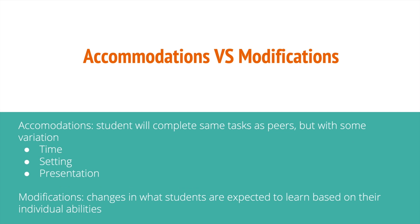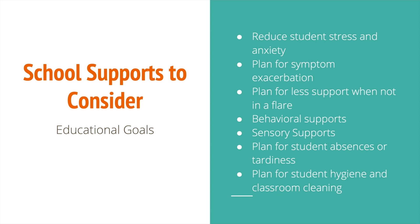Accommodations versus modifications — I'm going to be listing ideas of things you can use and list in either your IEPs or 504s for your students. In terms of a 504 plan, here are some examples of educational goals to consider for your PANS and PANDAS students: reduce student stress and anxiety; a plan for symptom exacerbation — what will we do if they're in a flare; plan for behavioral supports; sensory supports; a plan for student absences or tardiness; and a plan for student hygiene and classroom cleaning.